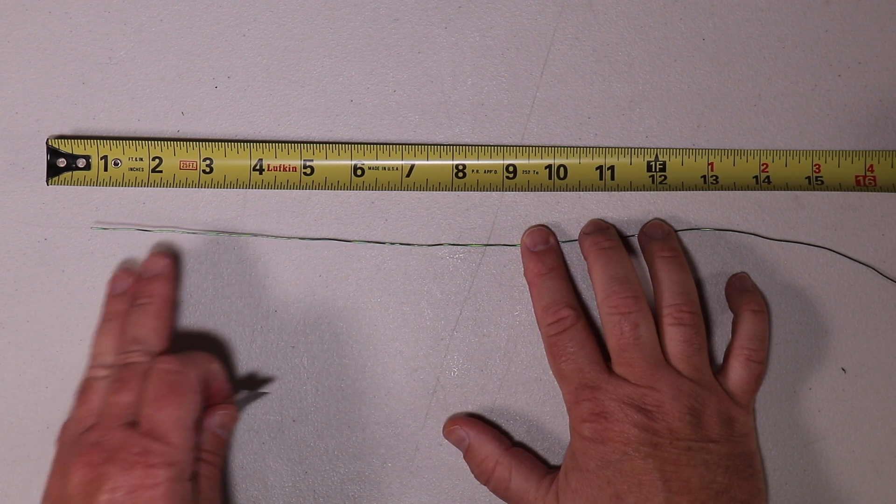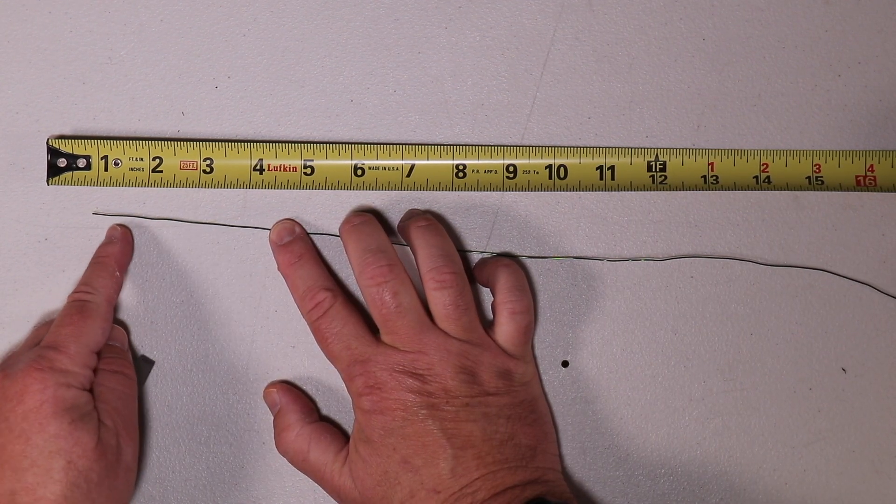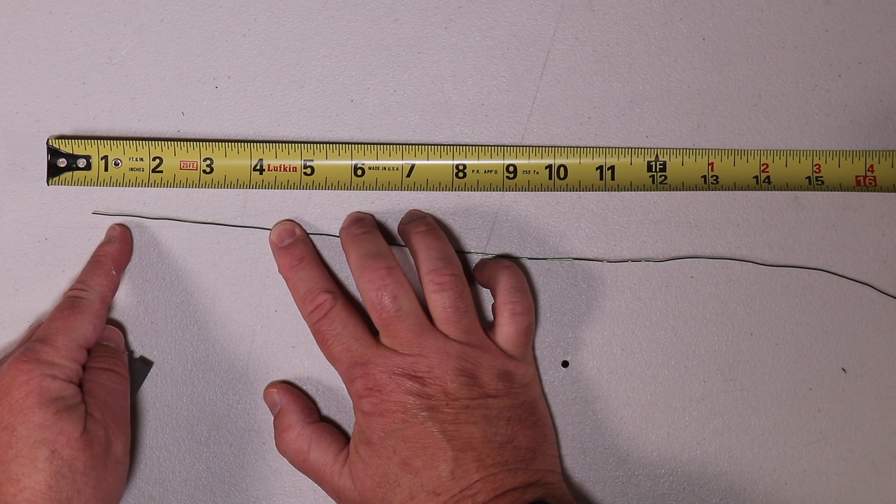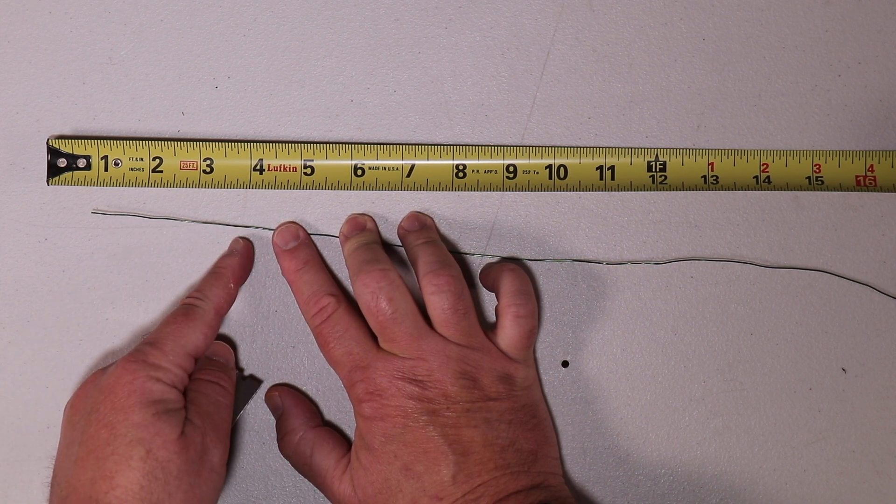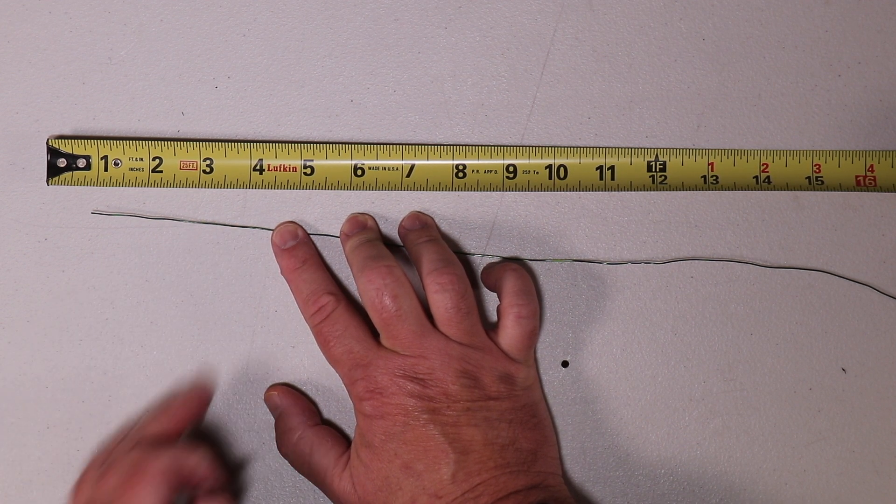The first thing we're going to do with this wire is we're going to remove the insulation from the first half inch of the wire and then the next step we're going to go from 3 3/4 inch to 4 3/4 inch and remove that part of the insulation as well.